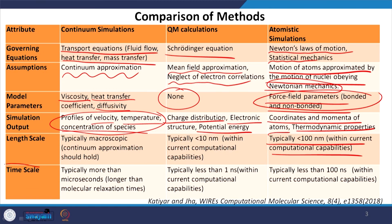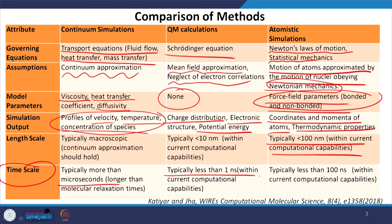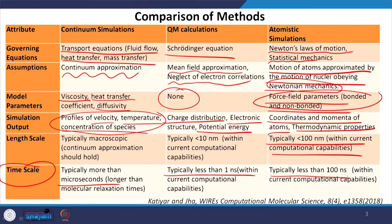In terms of time scale, continuum simulations can reach seconds or minutes — much beyond microsecond scales. Quantum mechanics is in the regime of less than one nanosecond, though many features of interest such as chemical reactions happen over very short times, so this is not necessarily a limitation. Atomistic simulations typically reach up to 100 nanoseconds; most phenomena of interest can be captured within that time scale, though certain phenomena require longer simulations currently not possible with available resources.